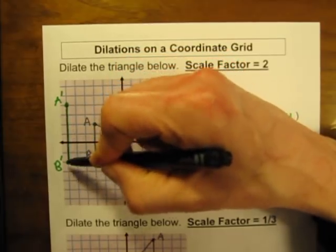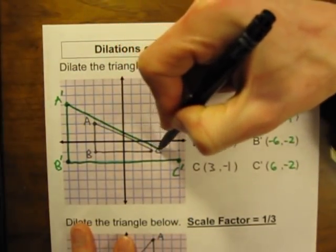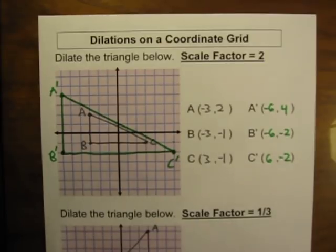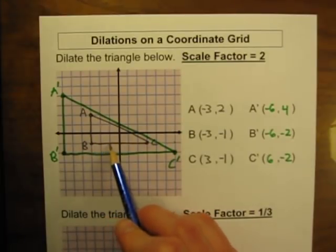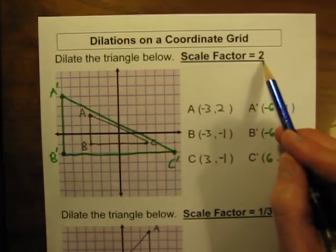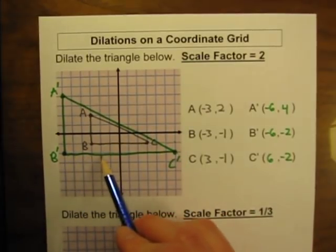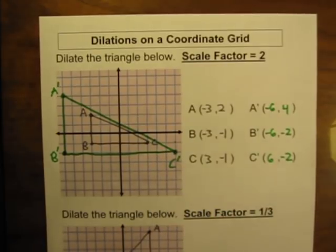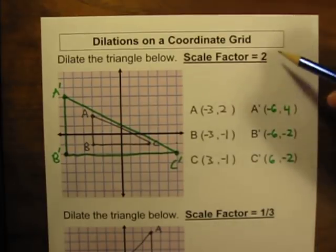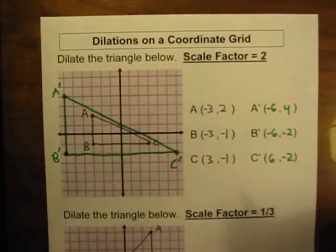Now I can draw in the new triangle connecting A prime, B prime, and C prime, and we end up with a triangle that has doubled in size. The original triangle had a base length of 6 units. With a scale factor of 2, the new base should be 6 times 2, which is 12. Counting the new base — it is indeed 12 units. We have doubled the size of our triangle, as expected. So if the scale factor is greater than 1, we're going to be increasing the size of our object.